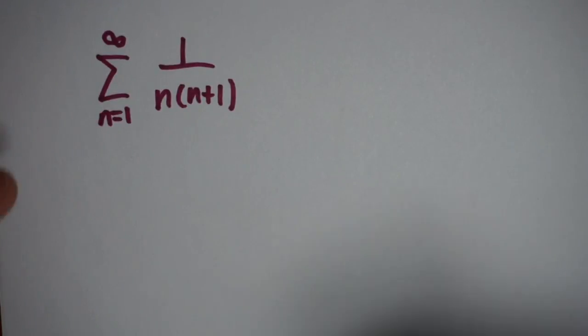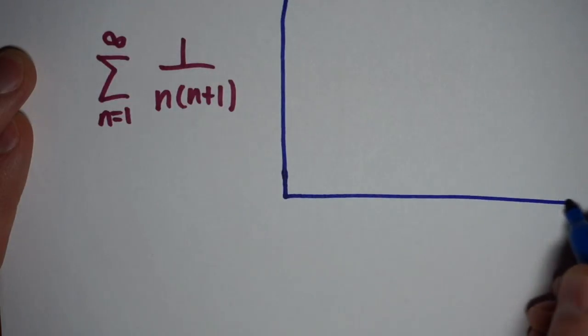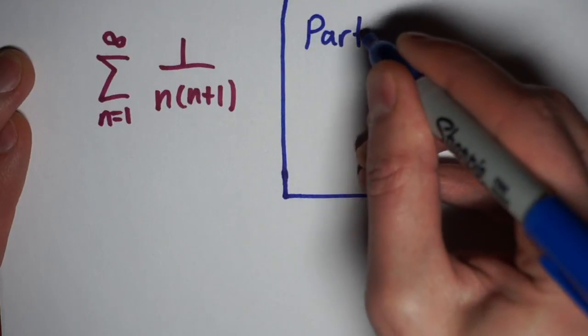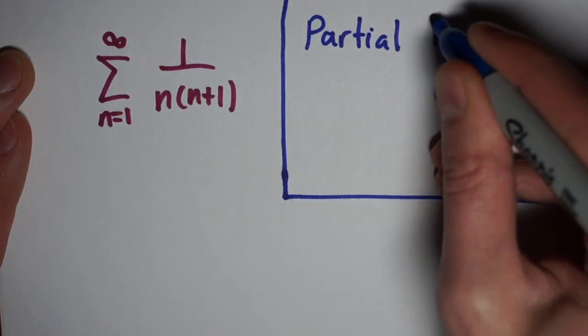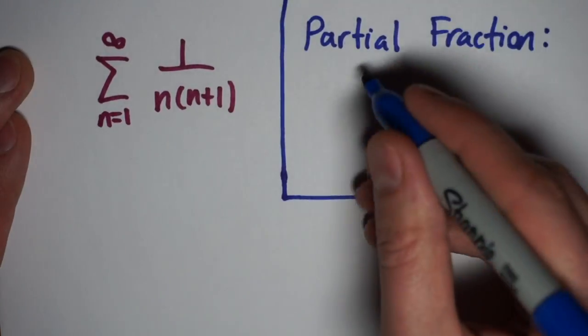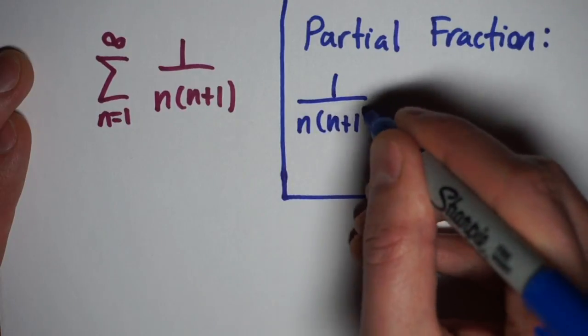What we're going to do instead is we're going to approach this a slightly different way, and we're going to use the idea of a telescoping series. One over n times n plus one looks like something that, when we integrate, we would use partial fractions for. So we can do the same thing here, and if the partial fractions work out nicely, our partial sums are going to be much easier to work with.